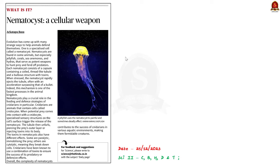Look at this science page article. It talks about a specialized cell which helps animals to survive in their habitat. These specialized cells are called nematocysts and they are not present in all animals but in a certain class of animals called cnidarians. For example, jellyfish, corals, sea anemones and hydras have these nematocyst cells.